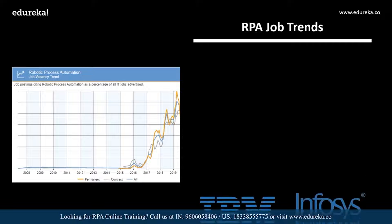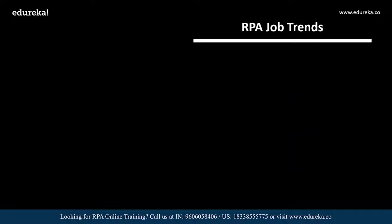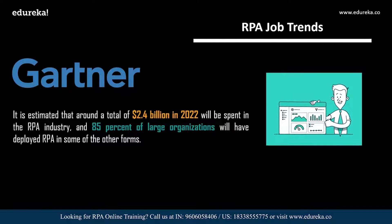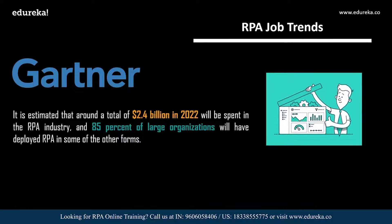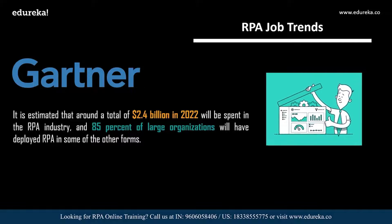RPA developer career opportunities will only shoot through the roof, with both startups and well-established companies such as IBM, Infosys, and KPMG offering lucrative salaries. According to Gartner, around 2.4 billion US dollars is estimated to be spent in the field of RPA by 2022, and 85% of large organizations will have deployed RPA in some form. All industries are looking for professionals who can quickly adapt RPA technology and automate manual tasks.